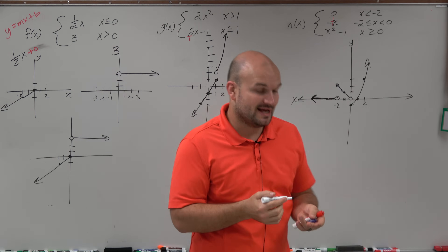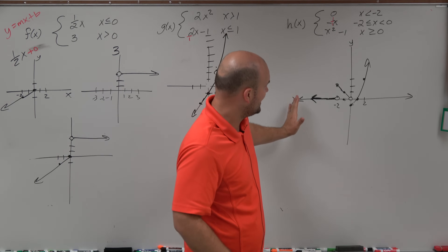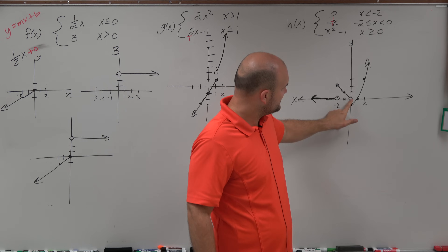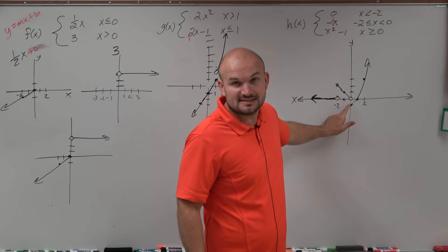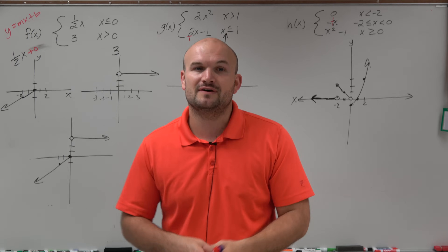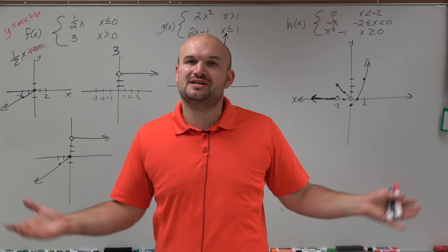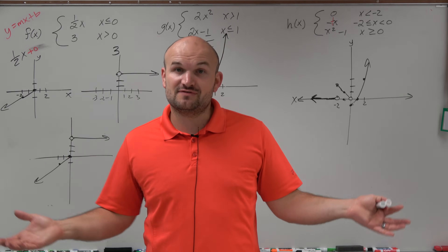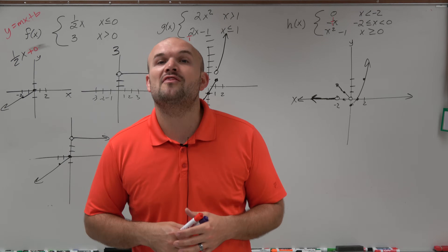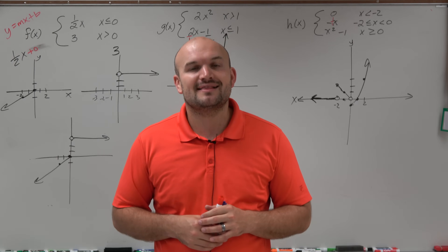And there you go. Notice that on each one of these values, this still passes the vertical line test. Even though we have two points at the same x-value, one is contained and one is not. So it still passes the vertical line test. It's just a function comprised of two or more functions — that's all a piecewise function is. Graph each function separately and then apply the constraints. That is how you graph a piecewise function. Thanks.